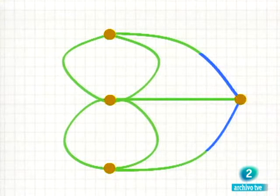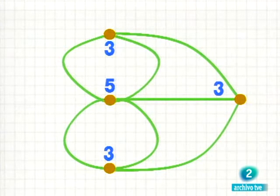Sin embargo, Euler observó que los cuatro puntos tienen un número impar de líneas, con lo que es imposible recorrerlos todos pasando una vez por cada uno de ellos.